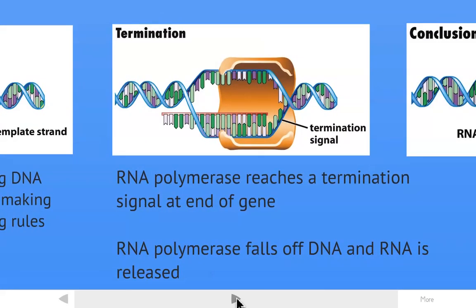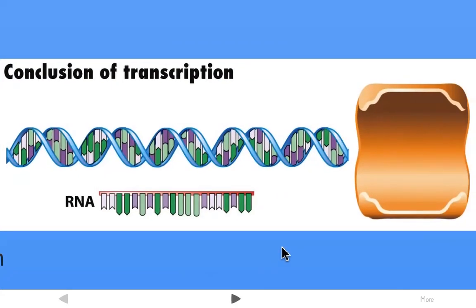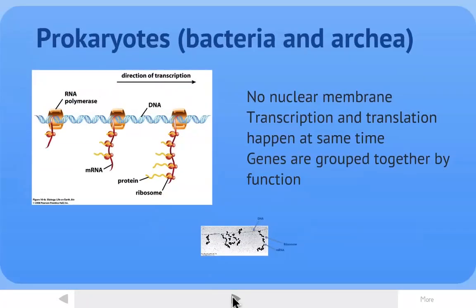Then the final stage, termination, which is quite simple. There is a special sequence on the DNA called a termination signal. RNA polymerase reads that and knows to stop. That falls at the end of the gene, and everything falls apart. DNA goes back to its original state. DNA is unchanged during transcription. And the RNA transcript is now released and is free to go about the cell and do its job.